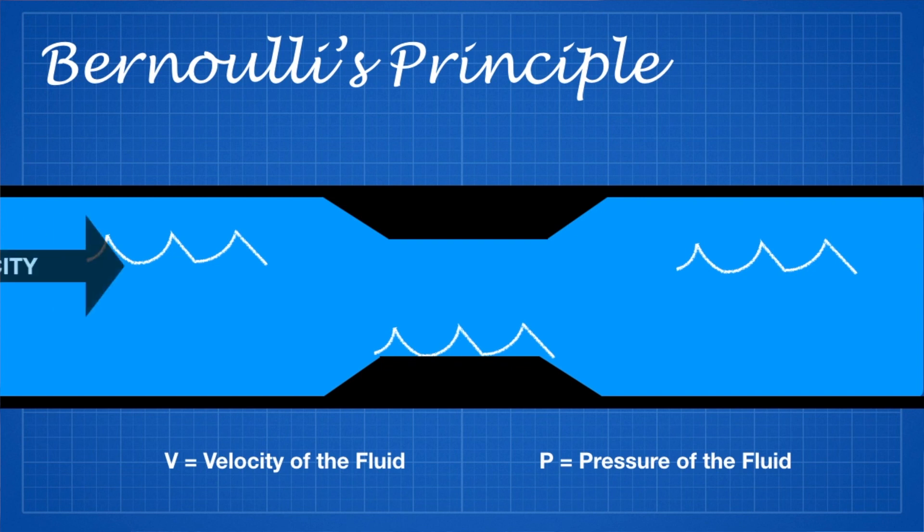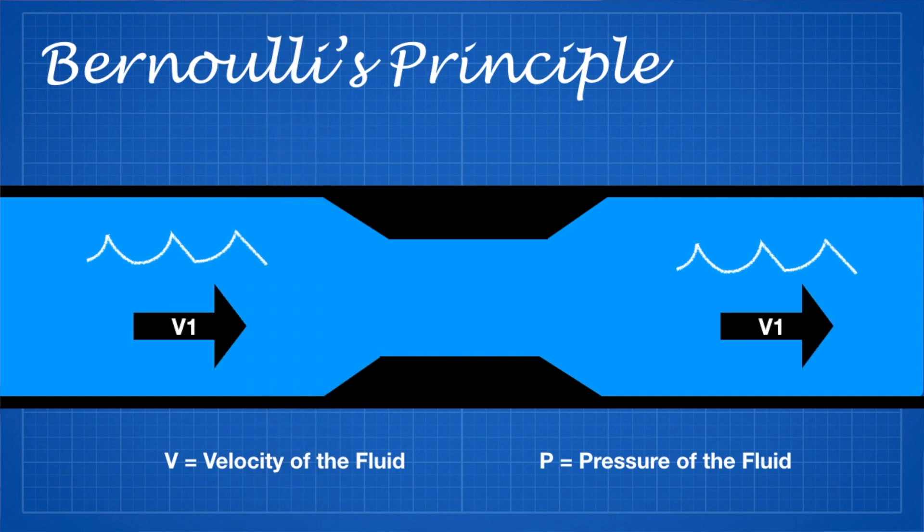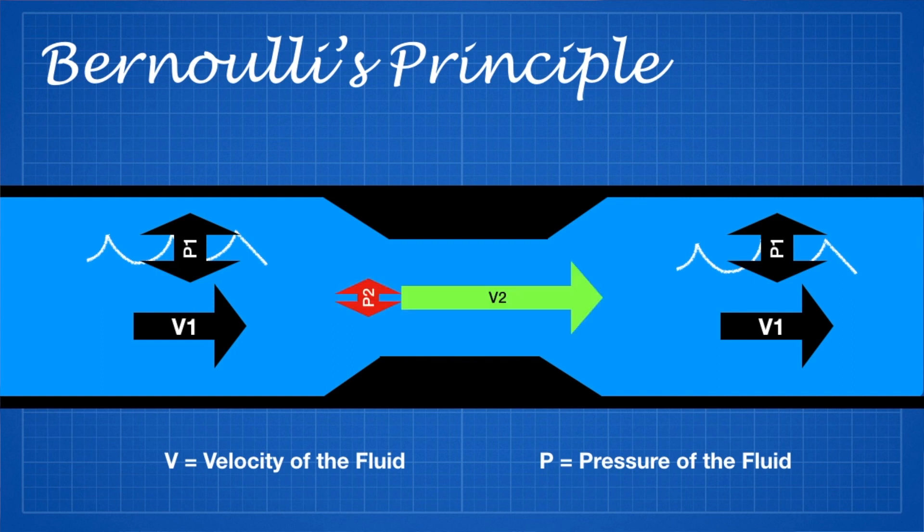Daniel realized that when pumping water through pipes, if the area of the pipe got smaller, the velocity of that fluid would increase to get the same number of molecules through a given area. But as it did that, there was less internal pressure in that fluid, so the pressure would decrease as velocity increased.